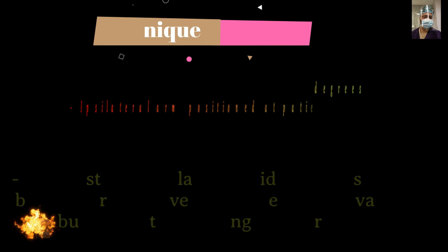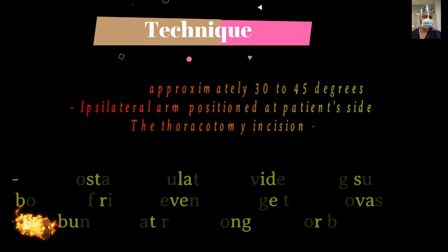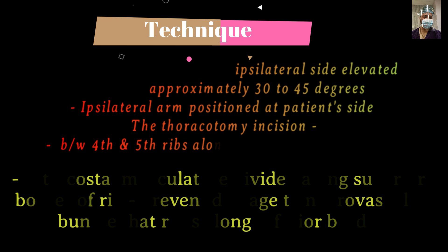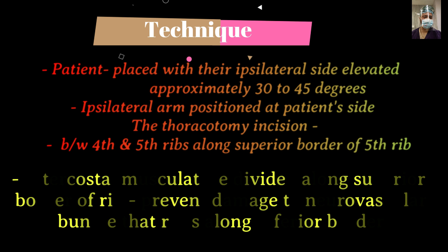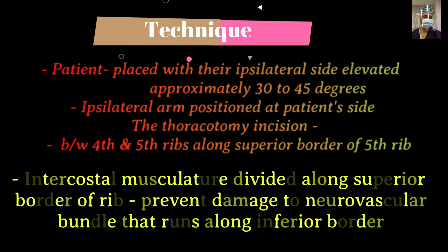Regarding technique and patient position: for right thoracotomy, the patient is placed in the left lateral position with the ipsilateral side elevated — that is, the right side up — and tilted further 30 to 45 degrees to the horizontal. This is called the sky-fall position. The arm is abducted above the head resting on an arm rest or pillow.